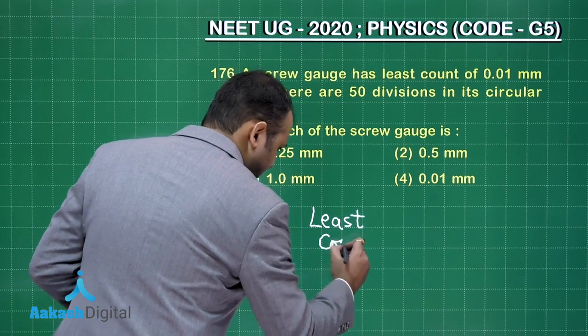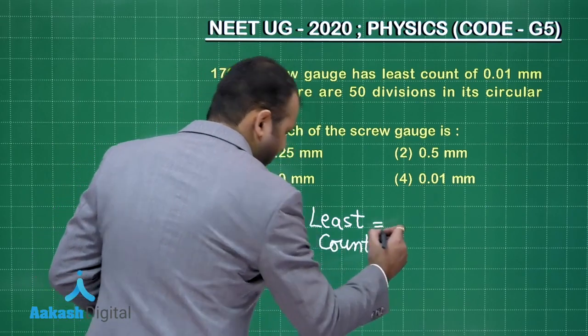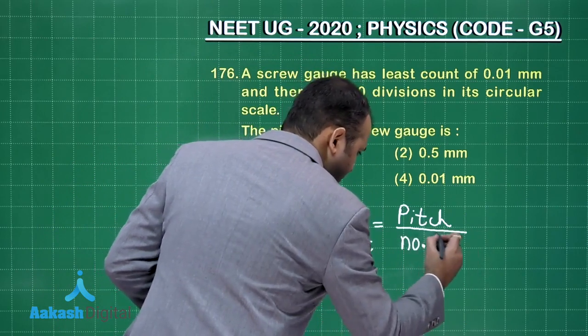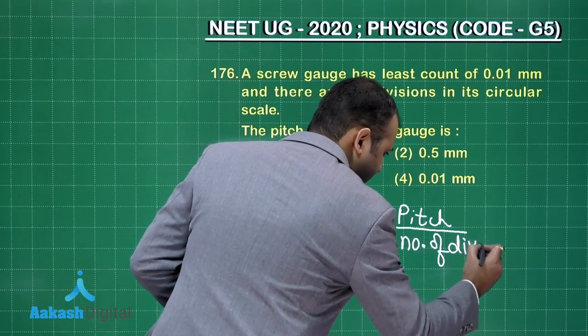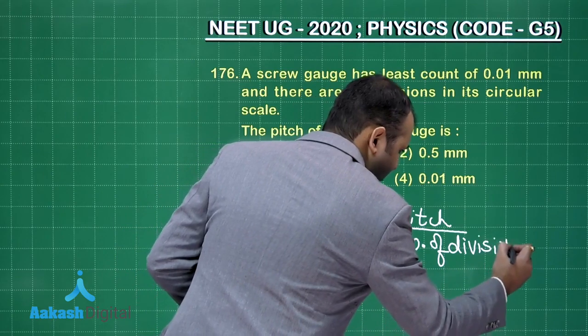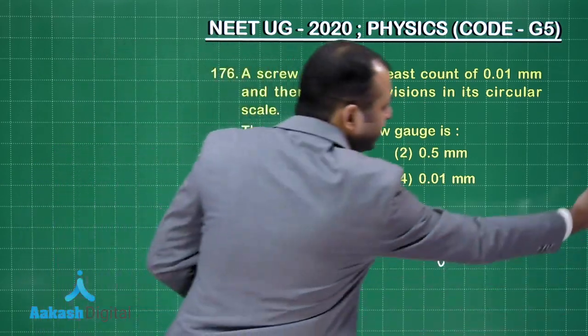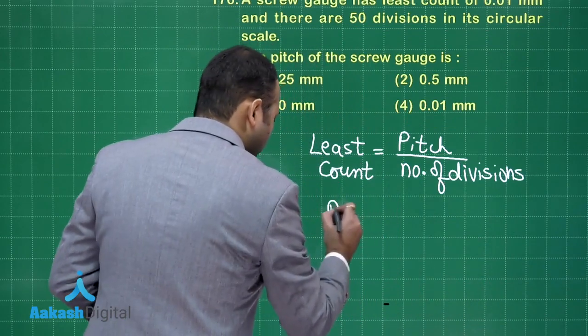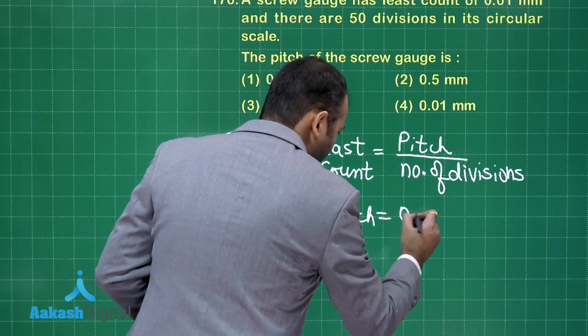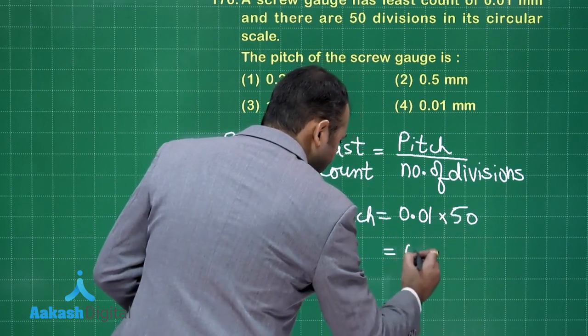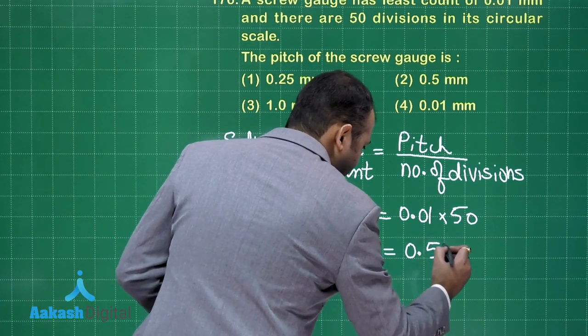So in this case, least count is given by pitch divided by number of divisions. Least count is given to us, number of divisions is given to us. A simple question. Pitch would be equal to 0.01 into 50, so this will be 0.5 mm.